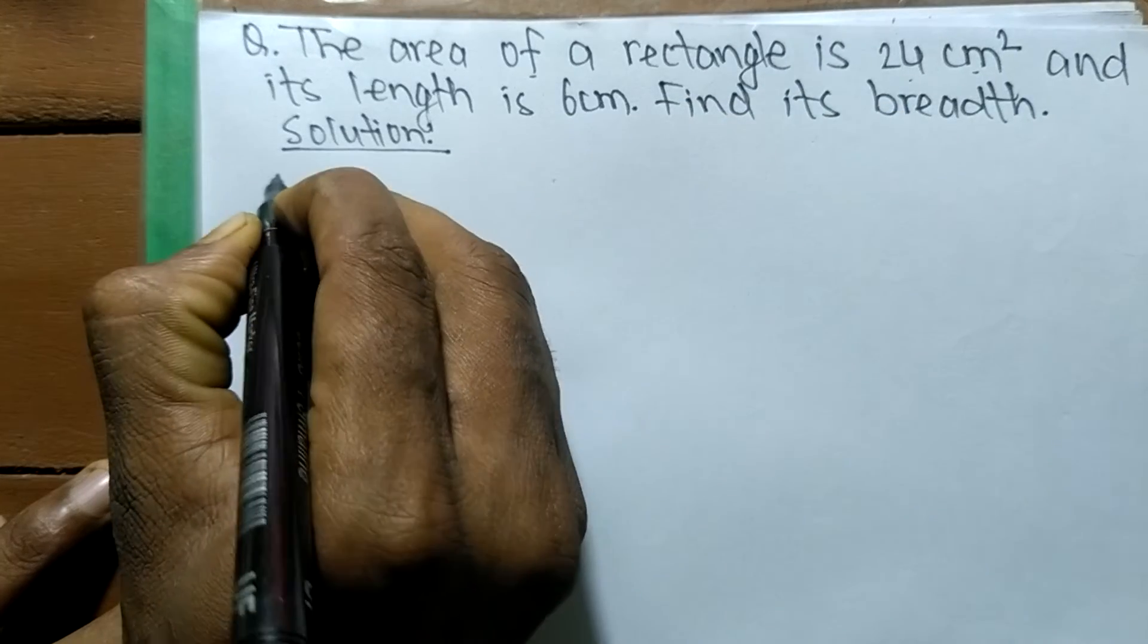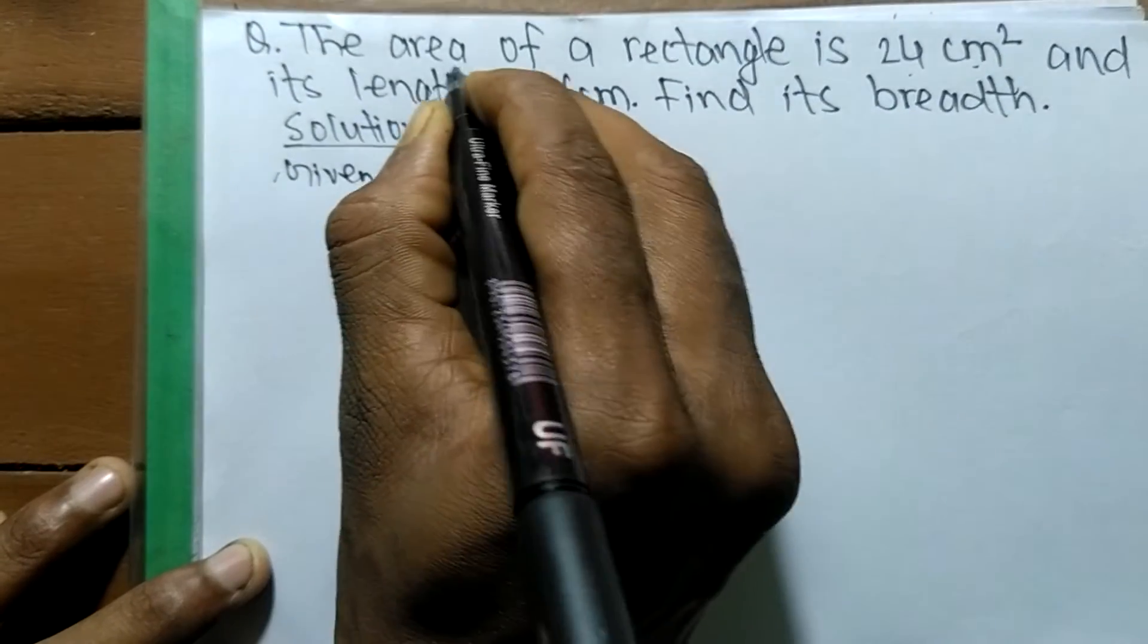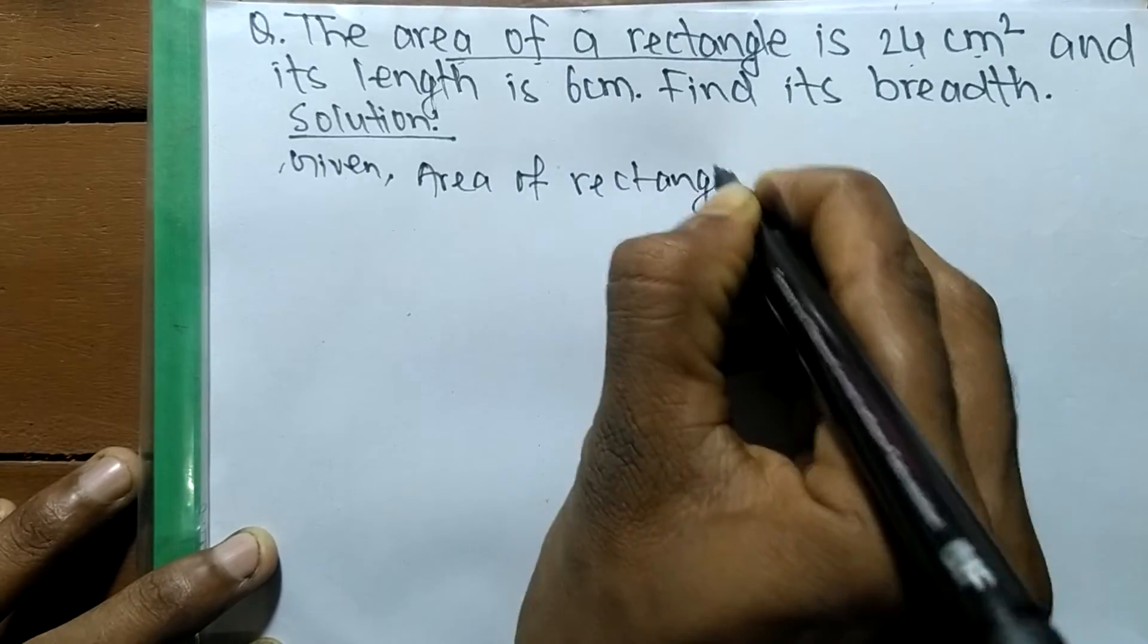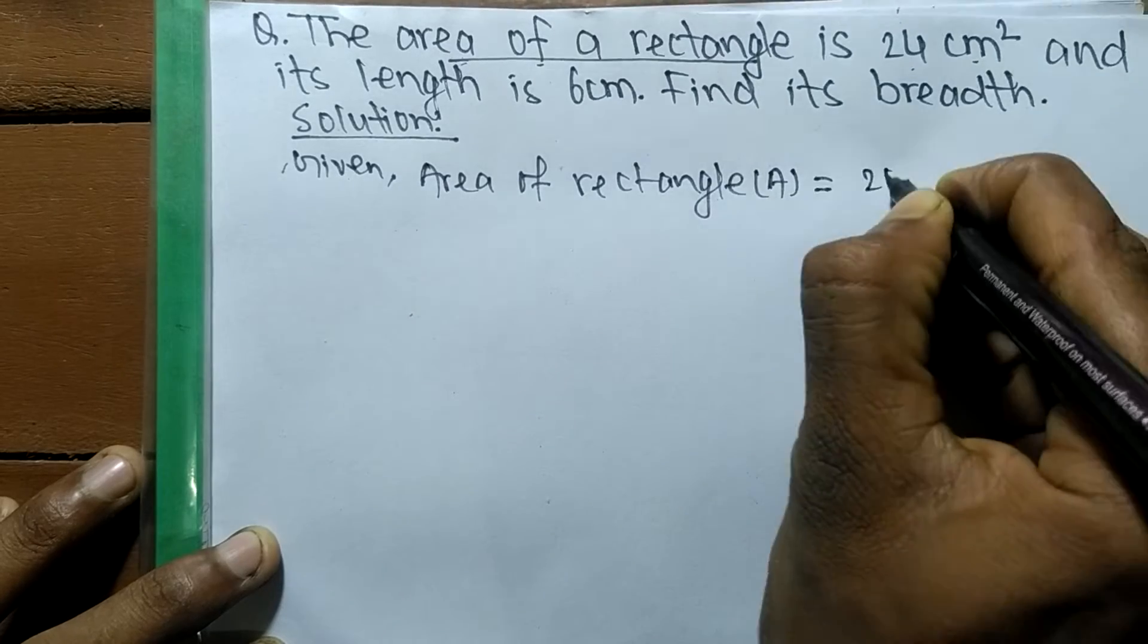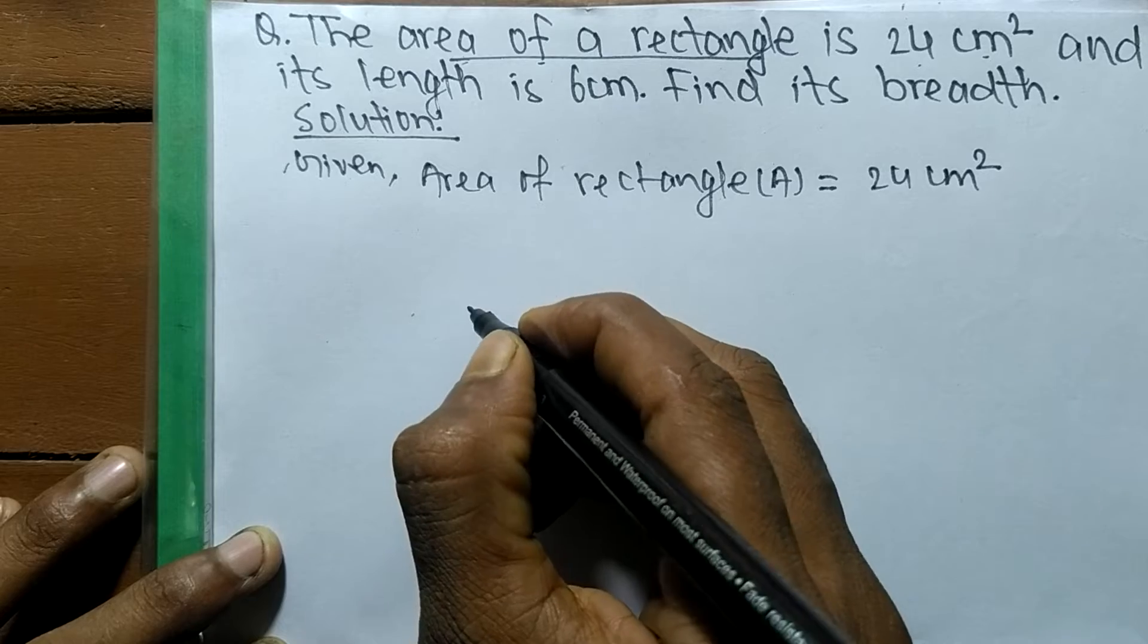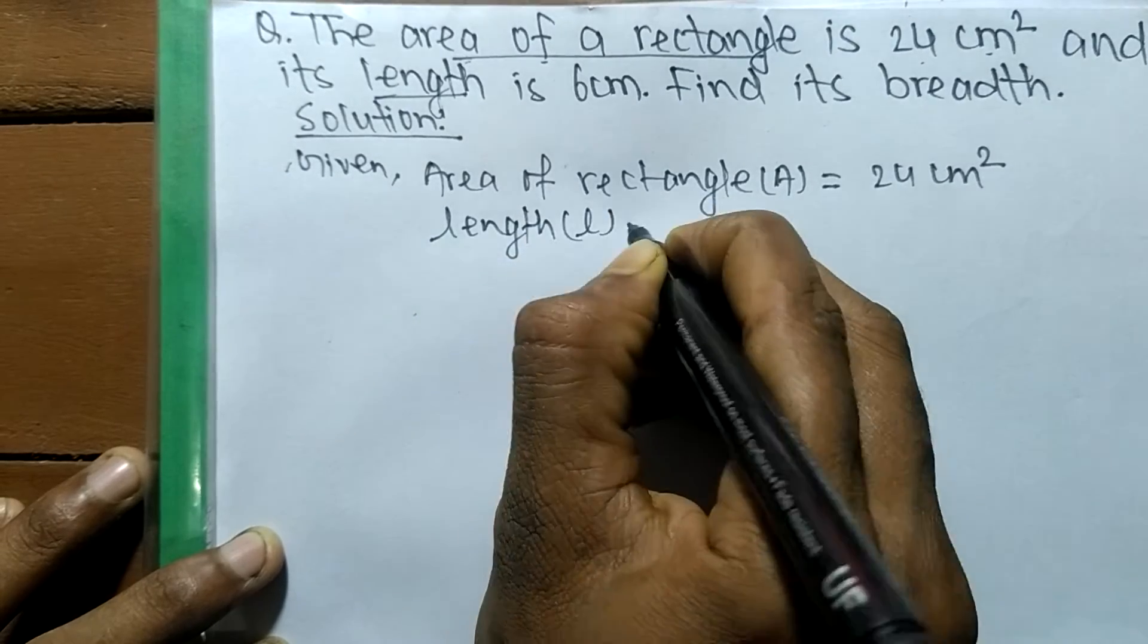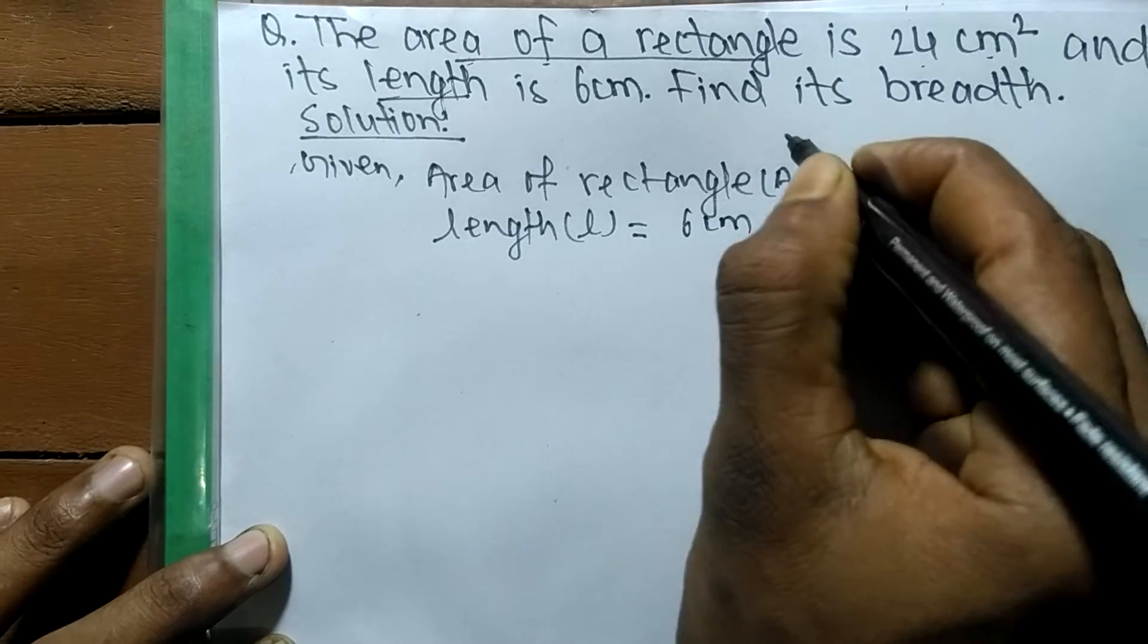Here we have given the area of a rectangle, so area of the rectangle we let it A, so A is equal to 24 centimeter square. We also have given length, so length suppose we let it by L is equal to 6 centimeter.